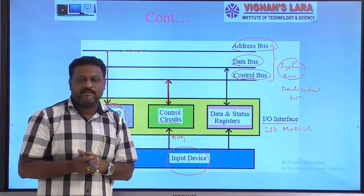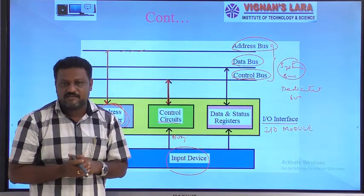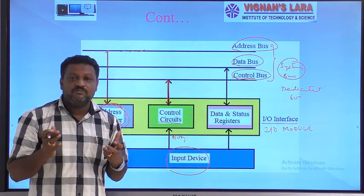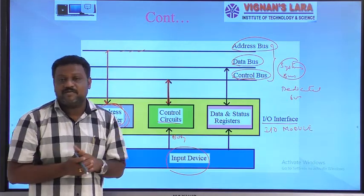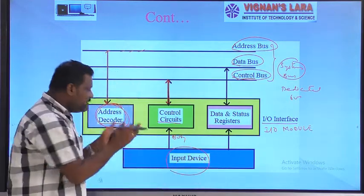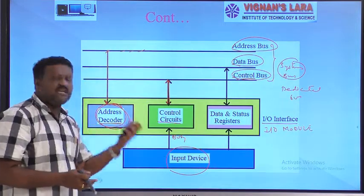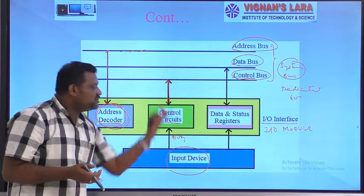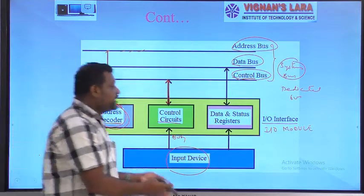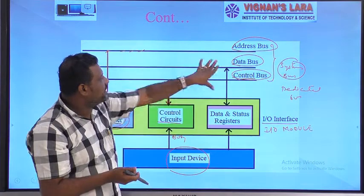Once the device is ready — meaning it is not busy with a previous task — it is ready to perform whatever tasks the processor assigns. For example, if the I/O device is free and receives an address and control signal from the I/O module, it is ready to transfer data to the I/O module. That data is then transferred to the processor via the data lines.